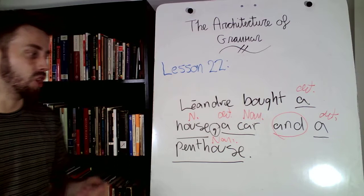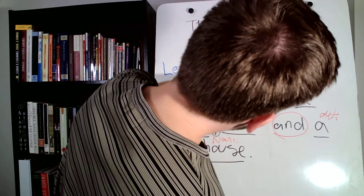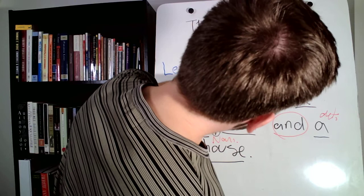So, you have to be parallel with the parts of speech that you are using in your list. Otherwise, your reader is going to be confused. And, it's honestly not going to look nice in a sentence. So, always make sure that you respect the rule of parallelism. And, so, if you want more examples of this, go in lesson 22 in the architecture of grammar. And, so, you can see all the examples in the lesson.